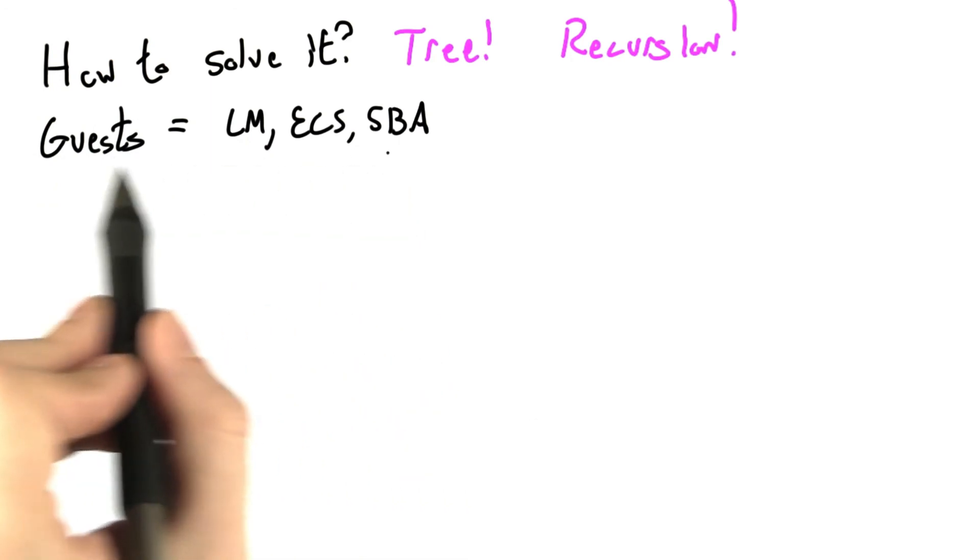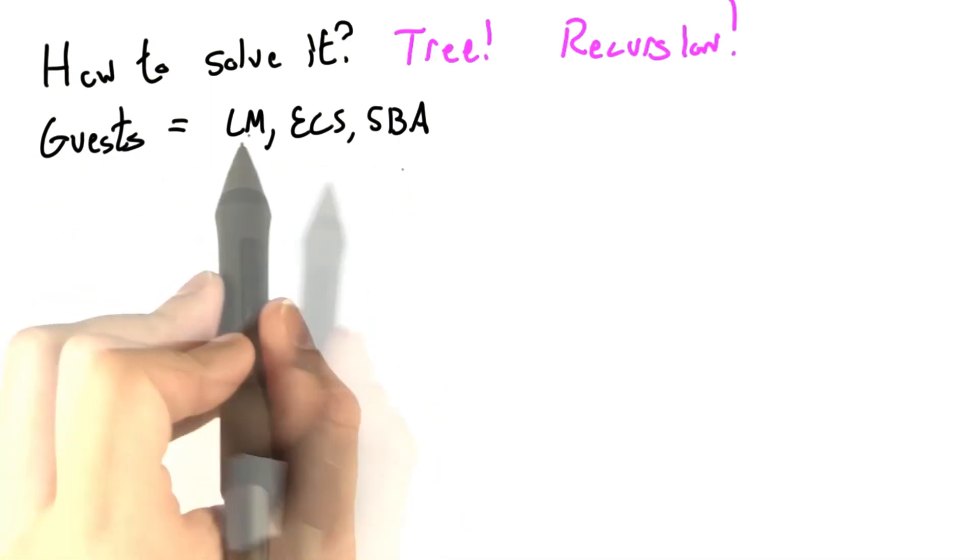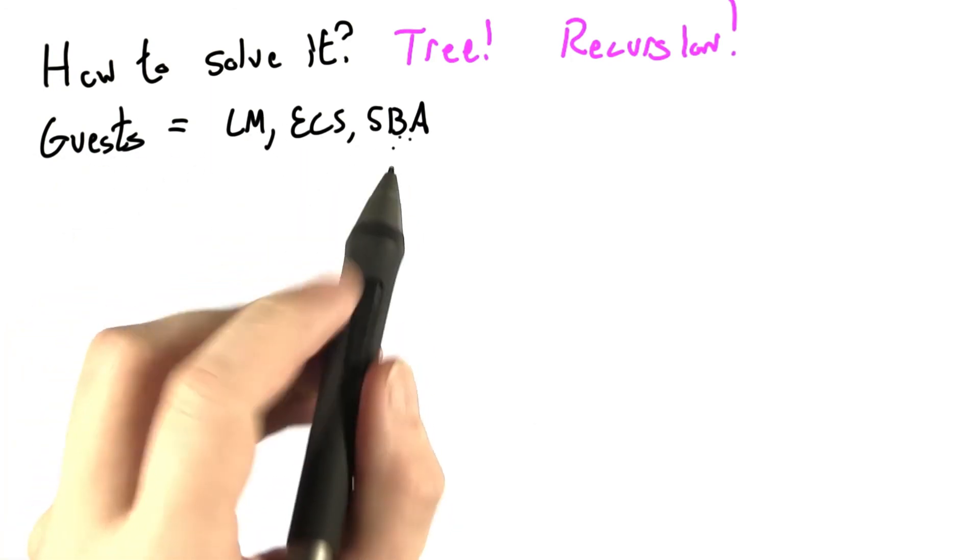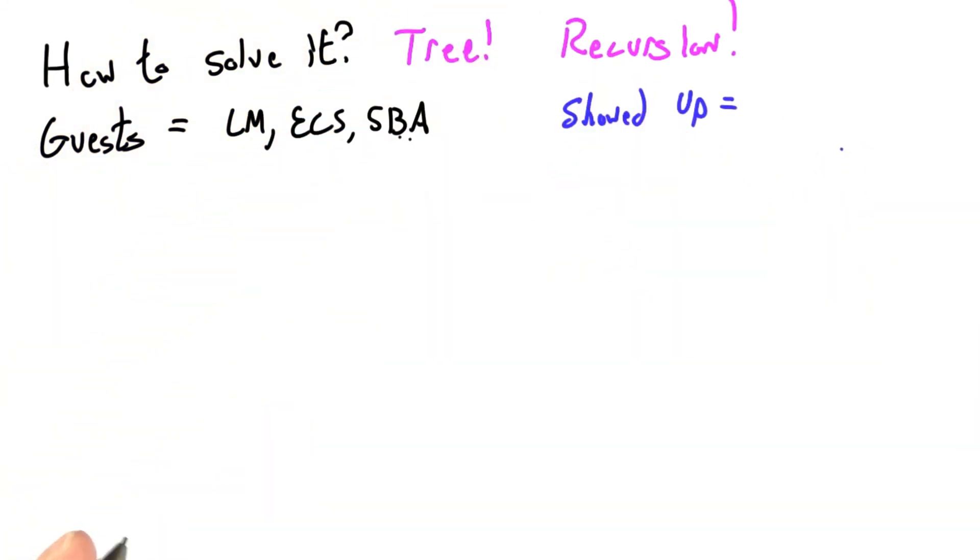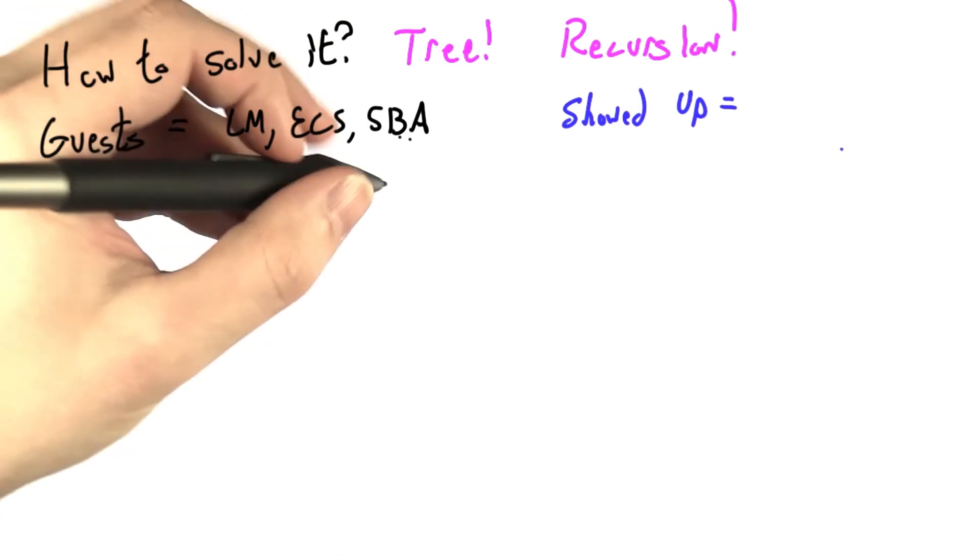Let's say that we start out with our possible guests remaining to be LM, ECS, and SBA, and the people who've showed up, let's say right now that's zero, and I'm going to walk through and diagram a tree that shows all eight possibilities.